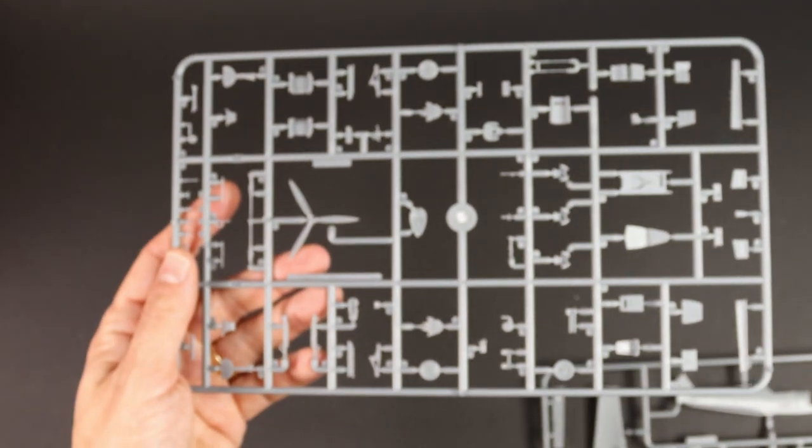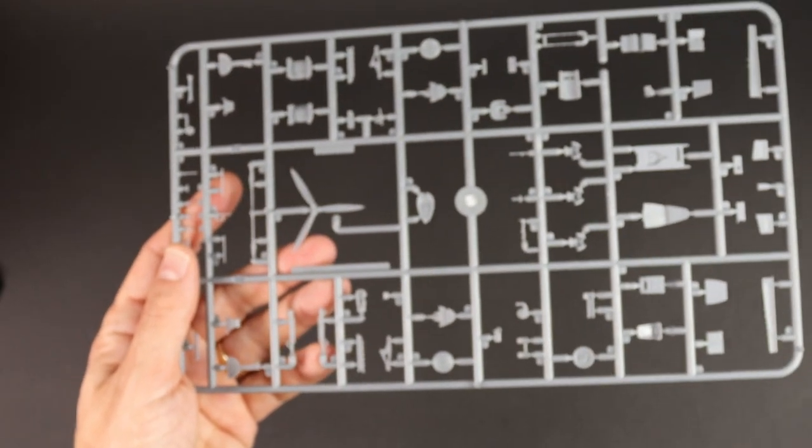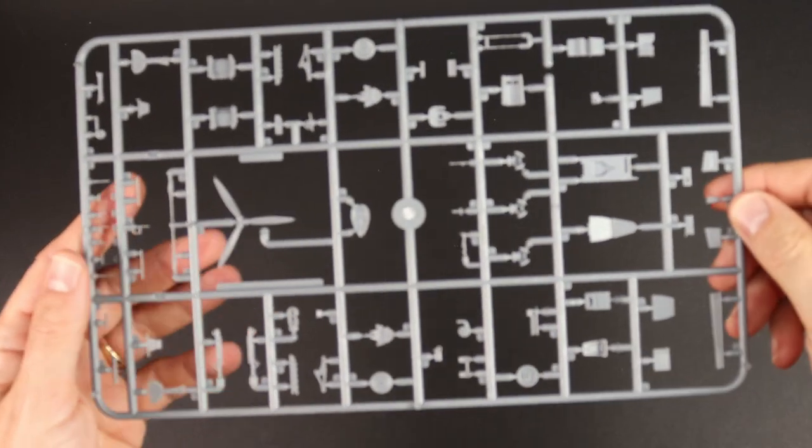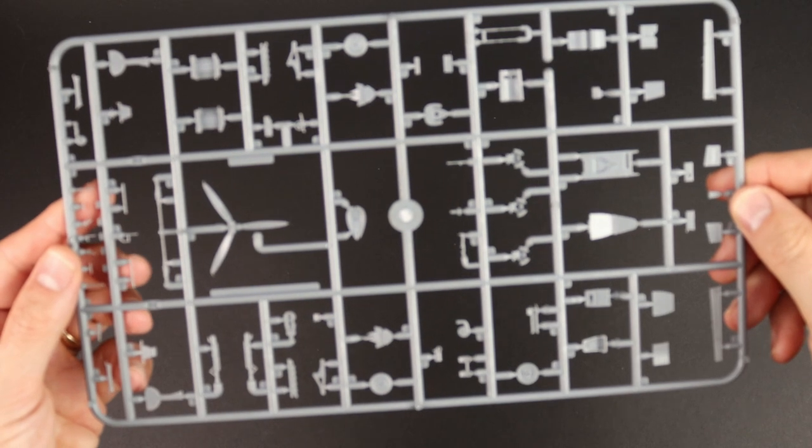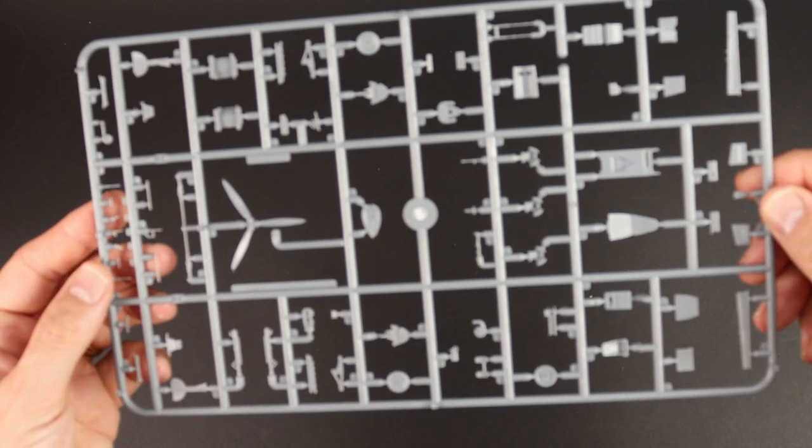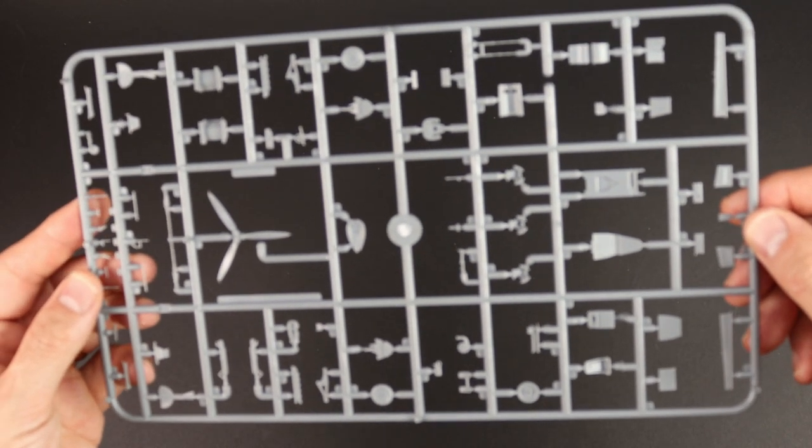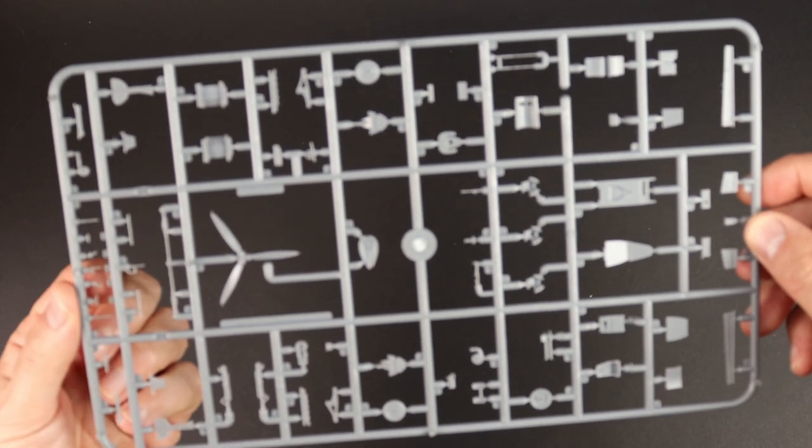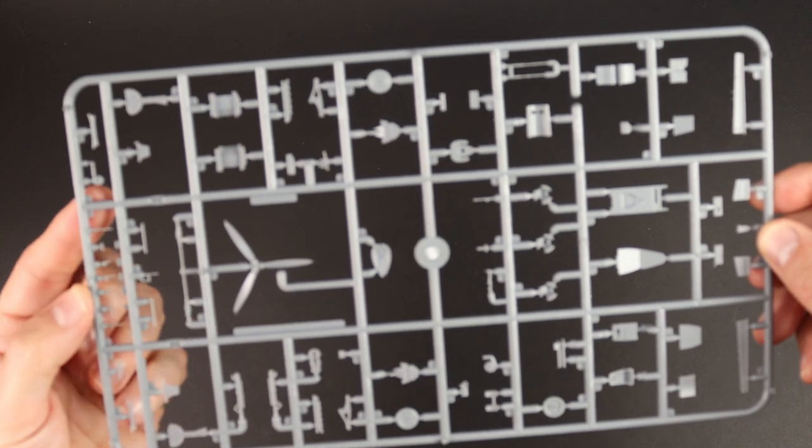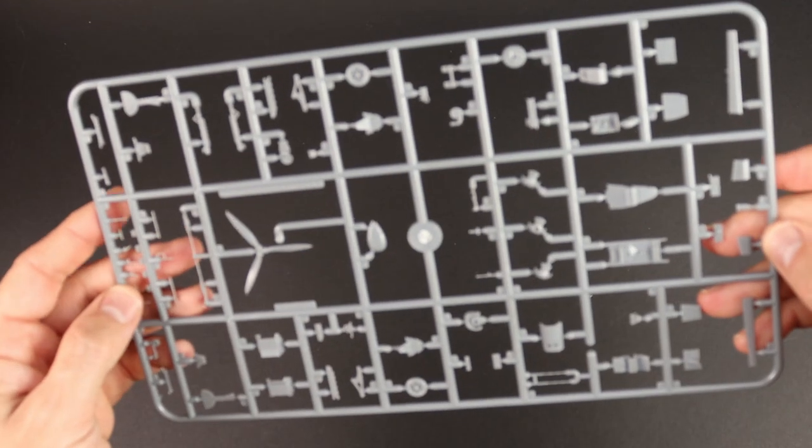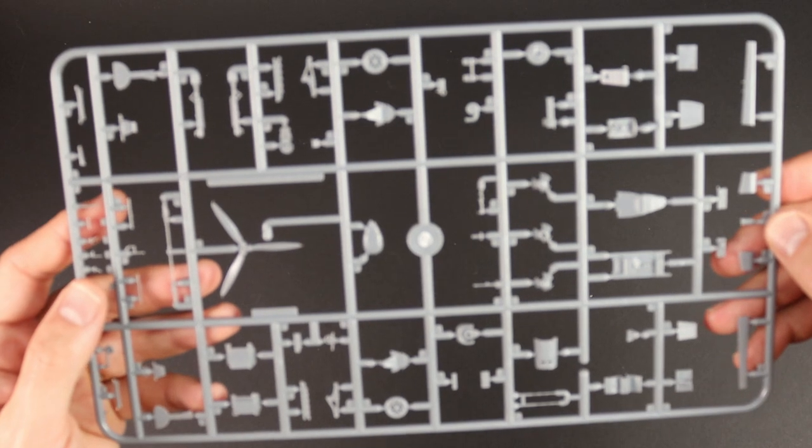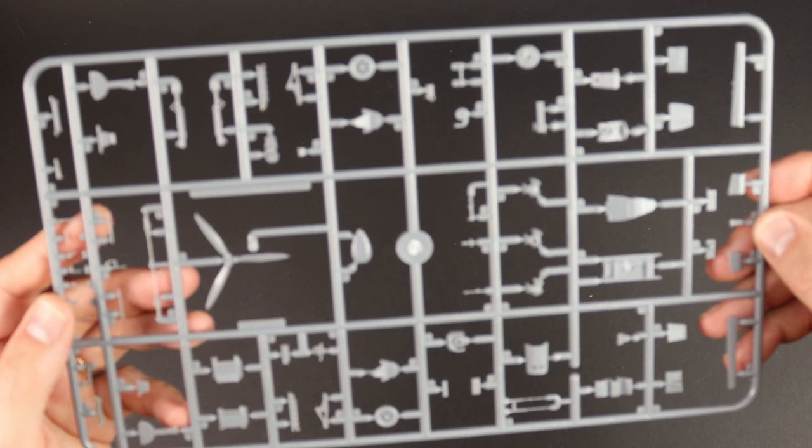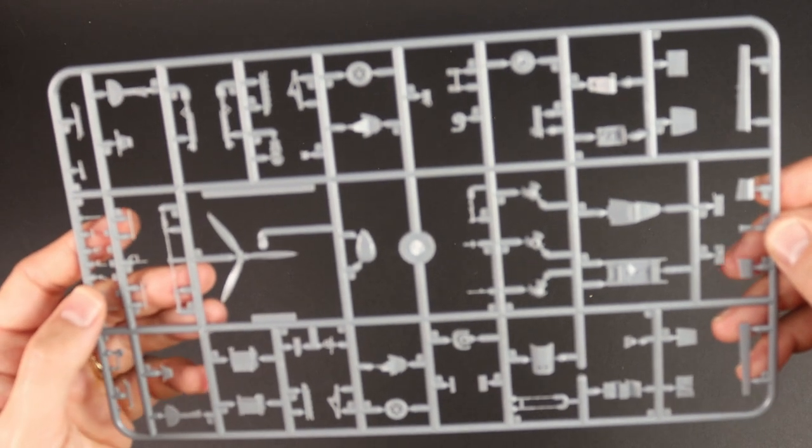Right, let's have a look at the B sprue. So here's all the detail parts. Obviously everything that's left over really, we've got the prop, the guns, engine mounts, exhausts, all the little mass balances down here, tail wheel. Flip this over, yeah, and again really nicely molded, really nicely detailed. And my goodness me, 1:72 scale.